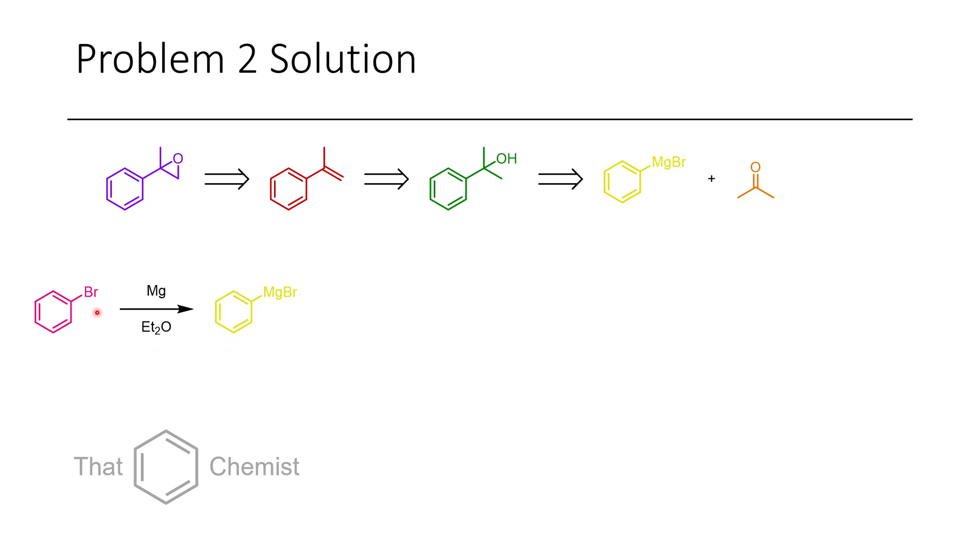In the forward direction first we take bromobenzene, treat it with magnesium to prepare this Grignard reagent. This Grignard reagent could then react with acetone to make this alcohol. This is called cumyl alcohol. Cumyl alcohol could then undergo an elimination with sulfuric acid to afford this alkene which would finally be epoxidized with MCPBA affording this epoxide.